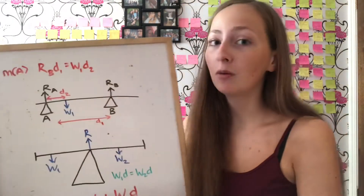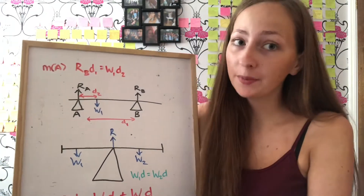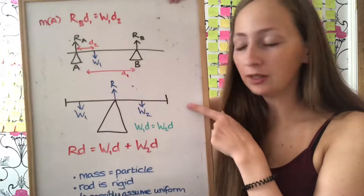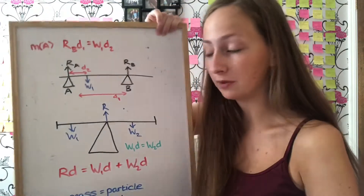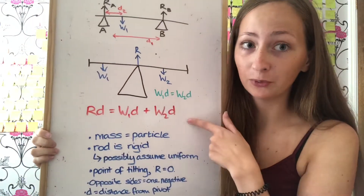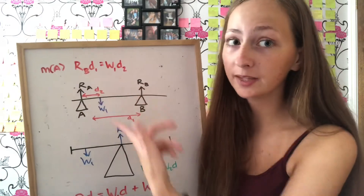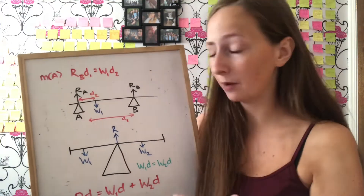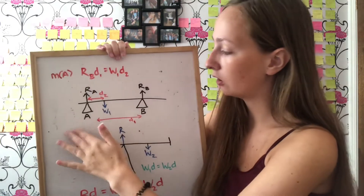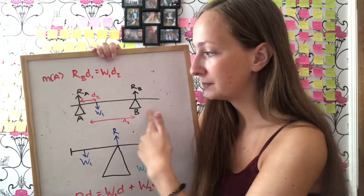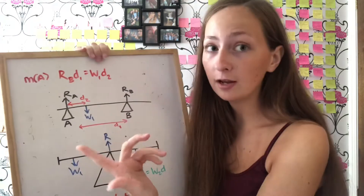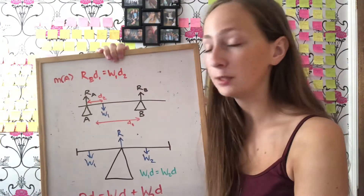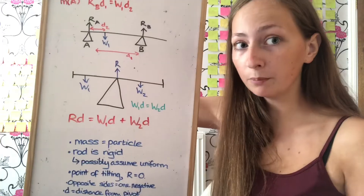Now moving on to Year 13 content: one of the first things you learn is moments. Moment is force times distance. For a more complicated diagram with two pivots A and B, you would find simultaneous equations. Taking moments about A: the reaction force at B multiplied by the distance from A equals the weight of the object multiplied by its distance from A. You can do the same taking moments about B.